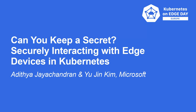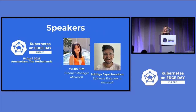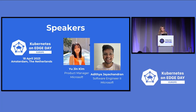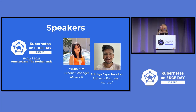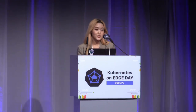Welcome everyone to our session about securely interacting with Edge devices in Kubernetes. My name is Yujin, I'm a product manager at Microsoft, and my fellow dev Aditya could not be here today in person. I'll go over the problem of IoT devices at the Edge, briefly explain what Akri is and how it works, the problem with secret management at the Edge, our solution proposal, a quick demo proof of concept, and a couple more considerations.